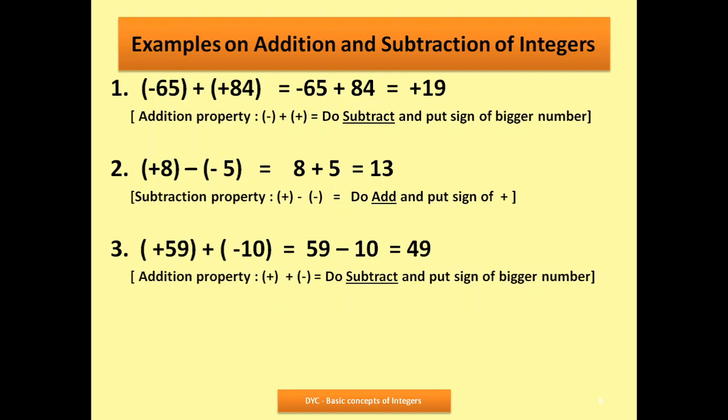Next example: plus 59 plus minus 10. Plus times minus gives minus. So it becomes 59 minus 10, which equals 49. I have not put a sign, meaning 49 is positive. It is not necessary to write the plus sign with a single number. The rule: subtract and put the sign of the bigger number. 59 is bigger and positive, so the answer is positive 49.